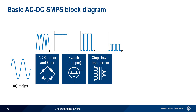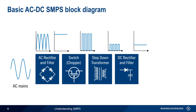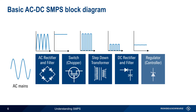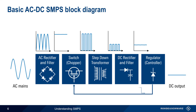Next, this lower voltage pulsed waveform is rectified and filtered again to produce relatively low voltage DC. A regulator or controller monitors the output DC and maintains the desired output voltage by changing the duty cycle of the signal used to open and close the switch. Note that some switching mode AC to DC supplies also contain additional functional blocks, such as an input filter or power factor correction, but we won't be covering these optional sections in this presentation.